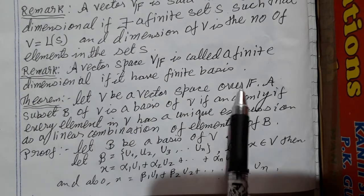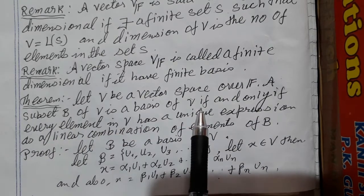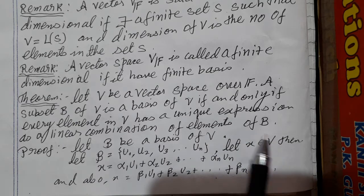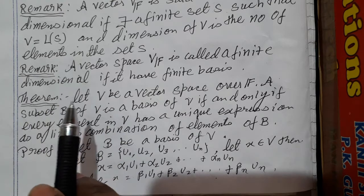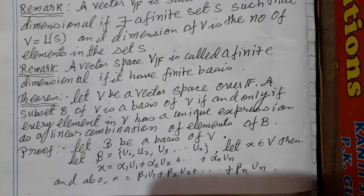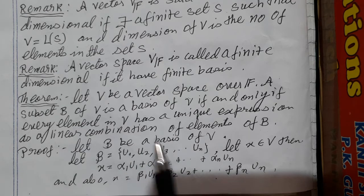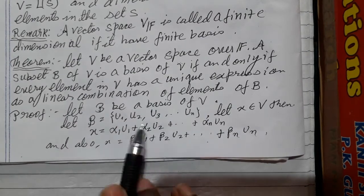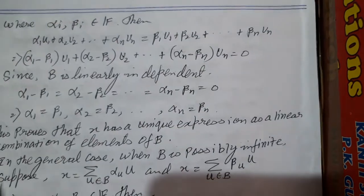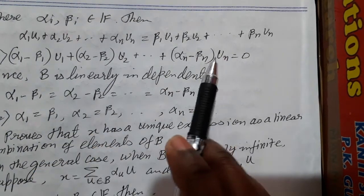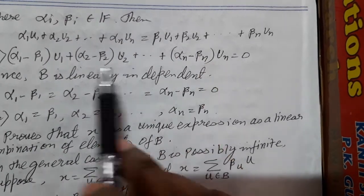Now let us do this theorem. We take a vector space over the field F; a subset B of V is a basis of V if and only if every element of V has a unique expression as a linear combination of the elements of B. I take one vector — since this is a basis, this element can be written as a linear combination of the basis vectors. To show uniqueness, suppose it can also be written as a linear combination of the same vectors with different scalars. Setting these two expressions equal and rearranging, since U1, U2, ... are linearly independent because B is a basis, the scalars must all be zero.